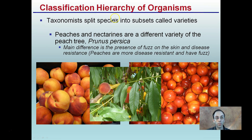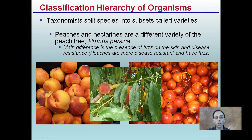Classifications can also split species into subsets called varieties. Peaches and nectarines are different varieties of the same peach tree. The main difference is the presence of fuzz on the skin — disease-resistant peaches have fuzz and a slightly higher disease resistance, while nectarines have a smooth, shiny skin and slightly less disease resistance. These varieties share many similarities but have those slight differences. The presence of fuzz doesn't universally indicate disease resistance, but in peaches it is a characteristic associated with it.